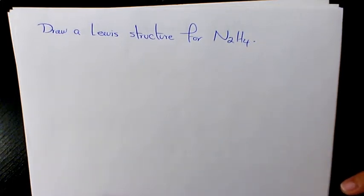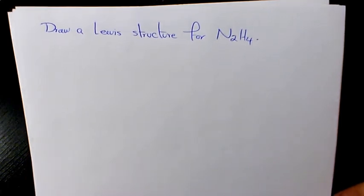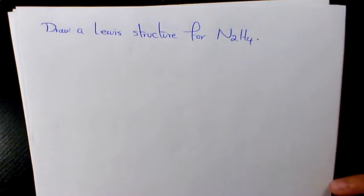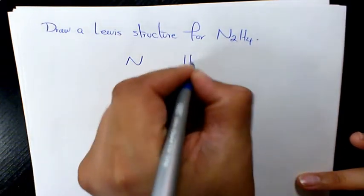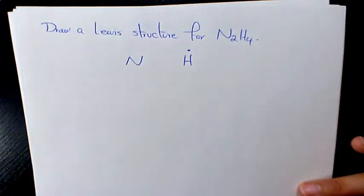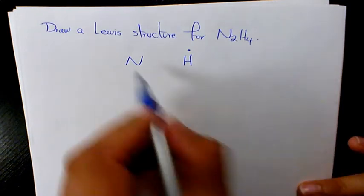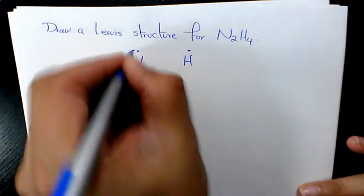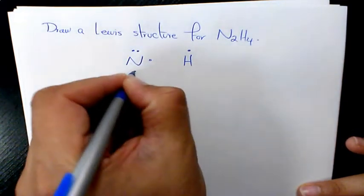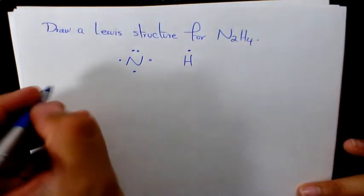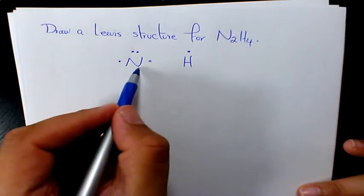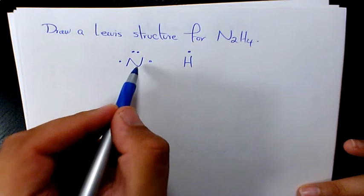The first thing we need to do is identify the central atom, which is usually the element with the highest bonding capacity. So we have nitrogen and hydrogen. Hydrogen has just one valence electron, nitrogen has five valence electrons. So N is the central element.